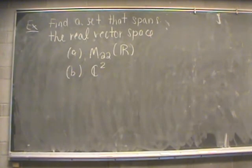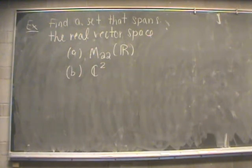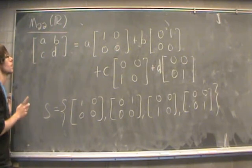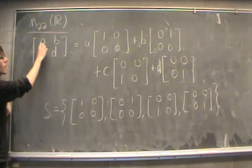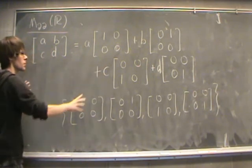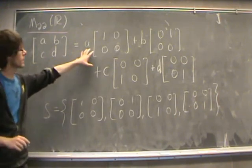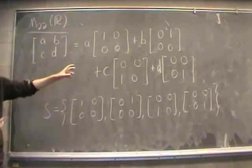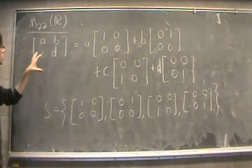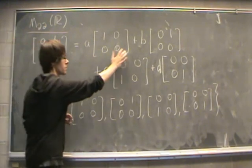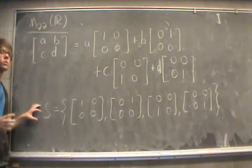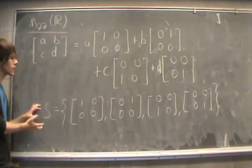Let's generalize that idea to other spaces, starting with 2×2 matrices with real entries, M22R. The general 2×2 real matrix with entries A, B, C, D can be broken into a linear combination of four matrices, one involving each entry. If we do the scalar multiplication and add them up, we return back to A, B, C, D. We call this set of four matrices a spanning set: span(S) = M22R.